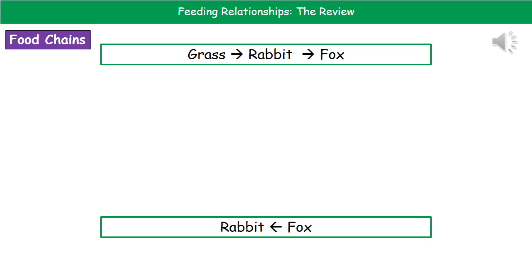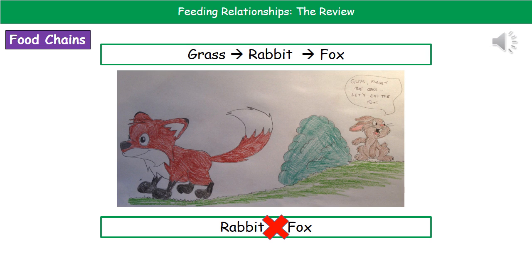If you put the arrow pointing from the fox to the rabbit, basically what you're saying is that the rabbit is going to be eating the fox, because the energy is going from the fox to the rabbit. We clearly know that isn't true — we don't see hordes of rabbits hiding behind a bush waiting to jump out on a fox and devour it. So make sure you get your arrow the right way around.